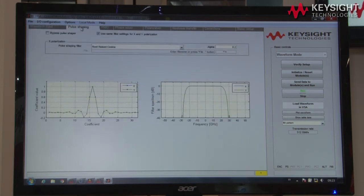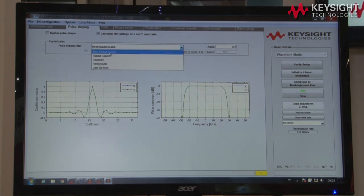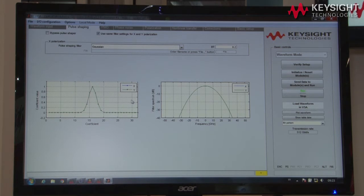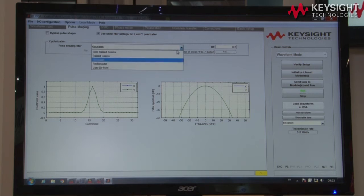The next tab allows me to define the pulse shaping of the signal. Right now I use a root-raised cosine filtering, but also raised cosine and Gaussian filtering is possible. On the lower section here we see the time domain of these filters and also the frequency domain of these filters just for reference. So I'm going back to root-raised cosine.